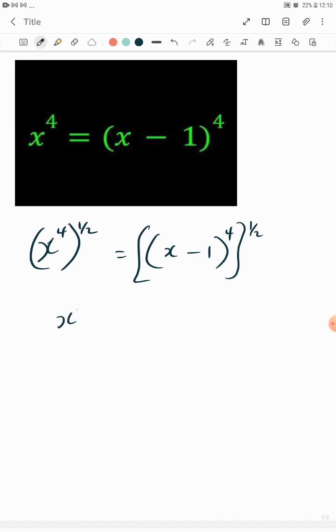This will give me x raised to the power 2, now equals x minus 1 raised to the power of 2. Expanding this now will give us x squared minus 2x plus 1, so we can transfer everything to the left hand side.